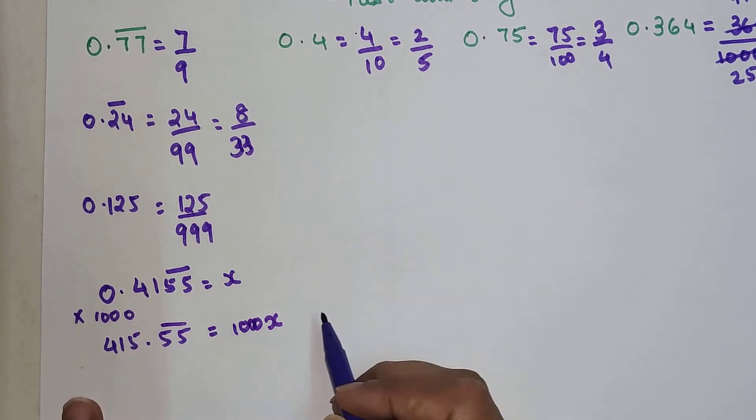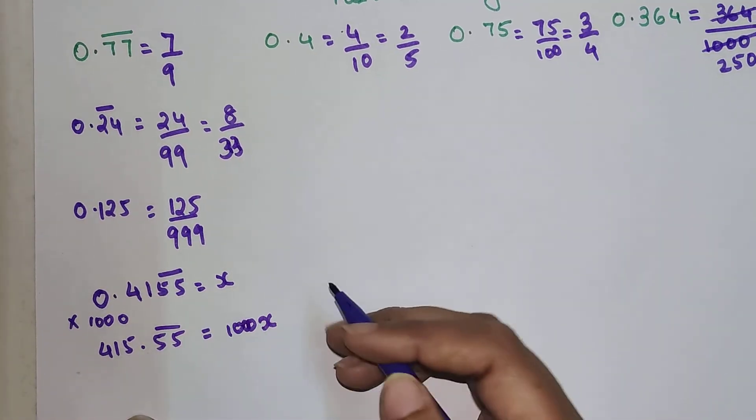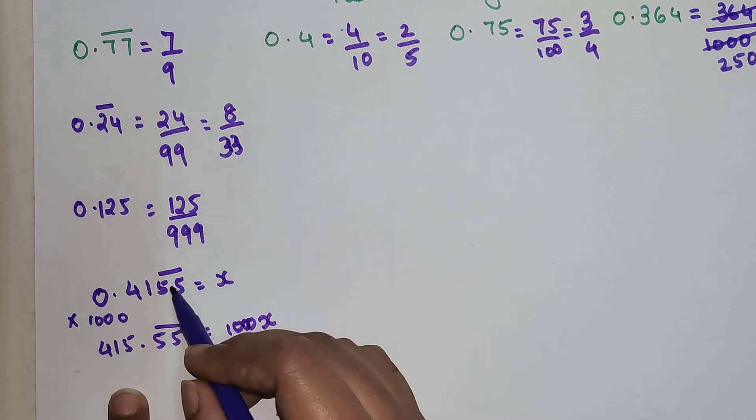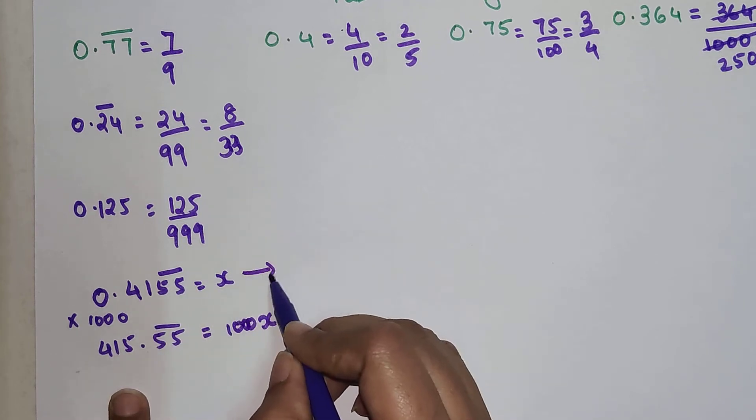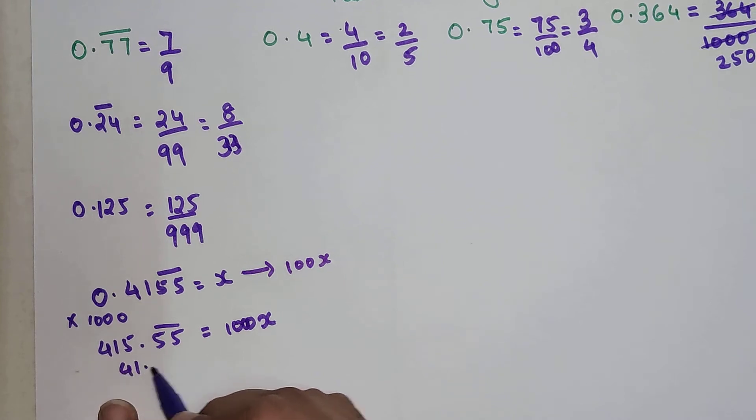You are multiplying by 1000 on both sides. Now, in order to find the actual fraction, you need to discard this. So how will I discard this from here? Here again I will multiply by 100x. So I will get 41.55, which is 55 recurring, and this will be 100x.